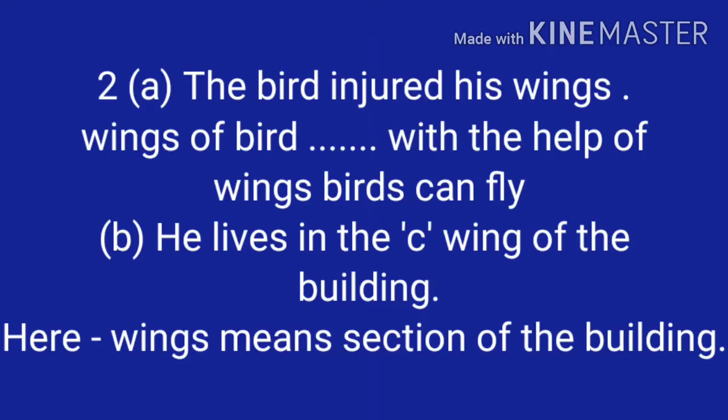Number two: A — 'The bird injured his wings.' Here 'wings' refers to the wings of birds — with the help of wings, birds can fly. B — 'He lives in the sea wing of the building.' Here 'wing' means a section of the building — इमारतीच्या एका भागात राहतो.